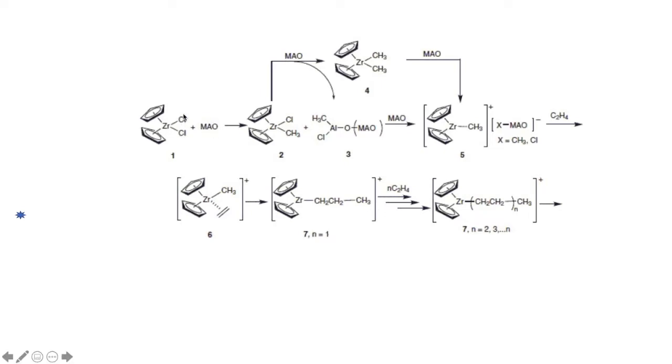The role of MAO is to replace the chlorines of the zirconocene with methyl groups. This leaves a positively charged zirconium. However, the positively charged zirconium is stabilized by an alpha-agostic association. The zirconium is lacking in electrons, so an alkene is added sharing a pair from their double bond. This stabilizes the zirconium.